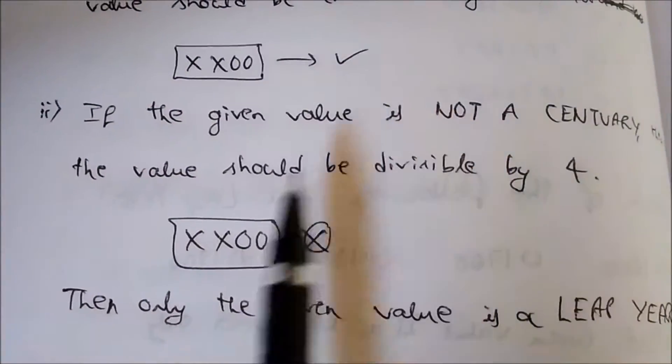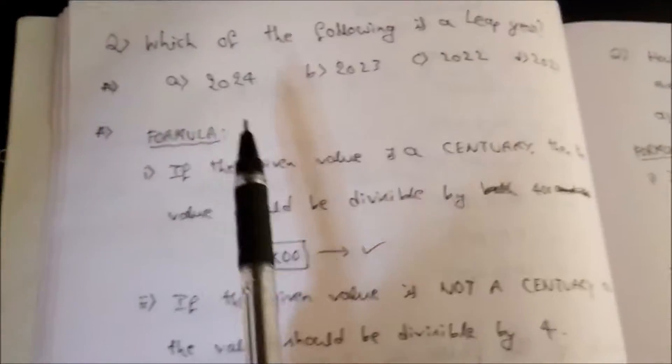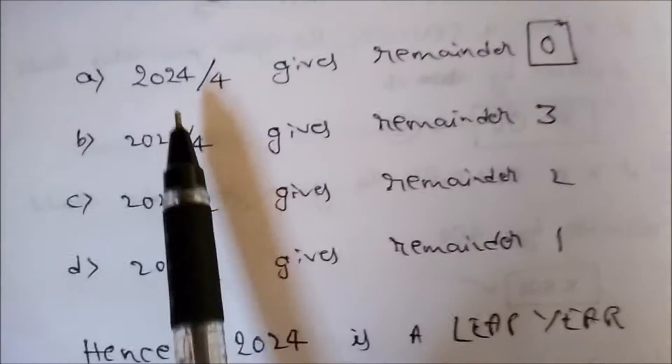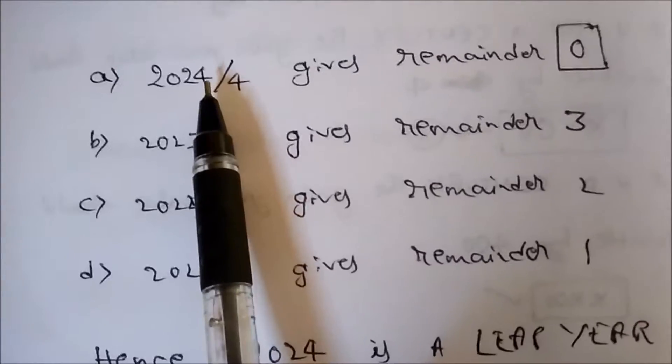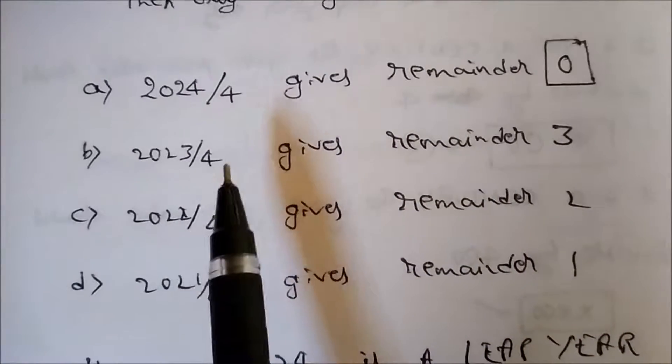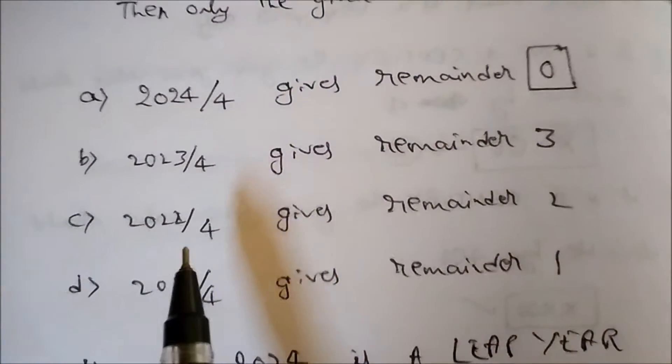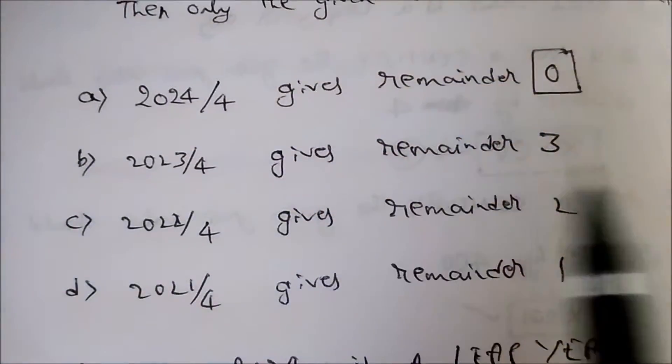Okay, let me take the first value 2024. 2024 divided by 4 gives remainder 0. And 2023 divided by 4 gives remainder 3. 2022 divided by 4 gives remainder 2.